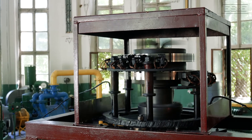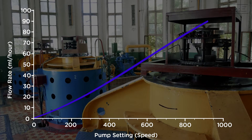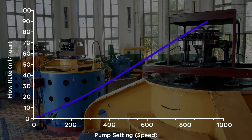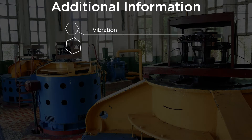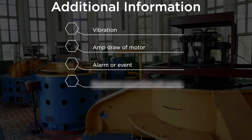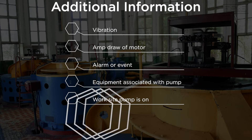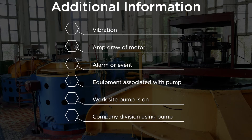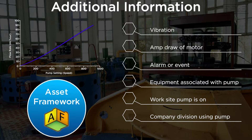Let me give you an example. Say you have a pump. One of the typical values captured when monitoring pumps is the flow rate. However, there's additional information that would be nice to know alongside that flow rate at the time it was captured — for example, vibration or the amp draw of the motor running the pump. Maybe an alarm or event that occurred — we'd like to know when that event happened and at what flow rate. Maybe we'd like to know what piece of equipment that pump is associated with, what site it's on, what division within the corporation. All that information is valuable. With asset framework, you can capture that alongside the flow rate, thereby creating that context or those relationships.